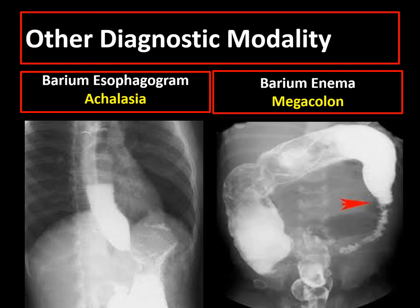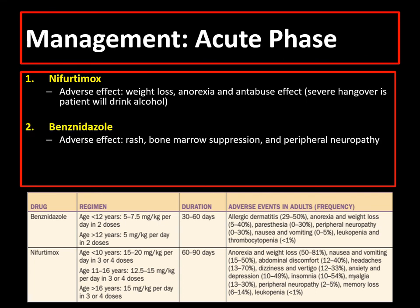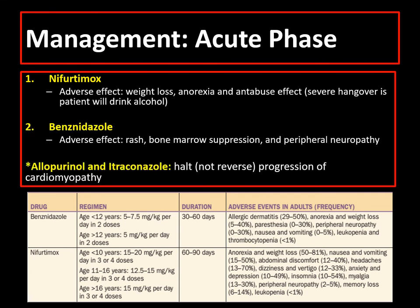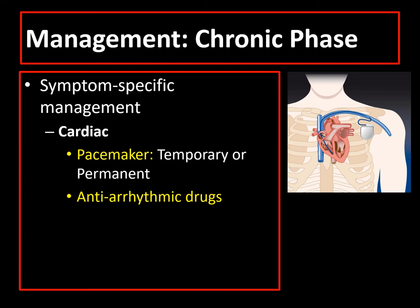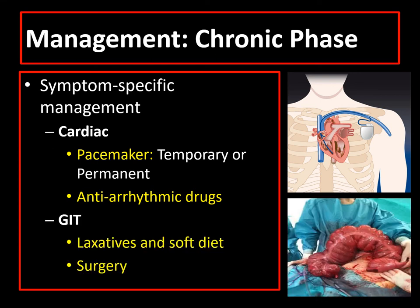In the acute phase, we can give nifurtimox or benznidazole to the patient. Allopurinol and itraconazole may also be given to halt the progression of cardiomyopathy. In the chronic phase, we address the complications of Chagas disease, like offering a pacemaker and/or anti-arrhythmic drugs if the heart is involved, or giving laxatives or surgical intervention in megacolon or achalasia.